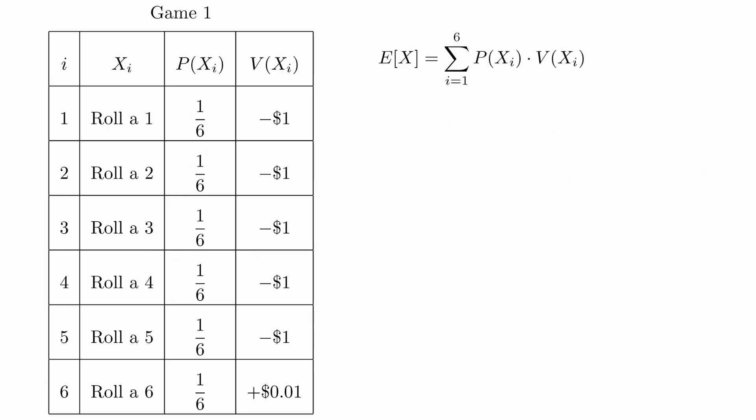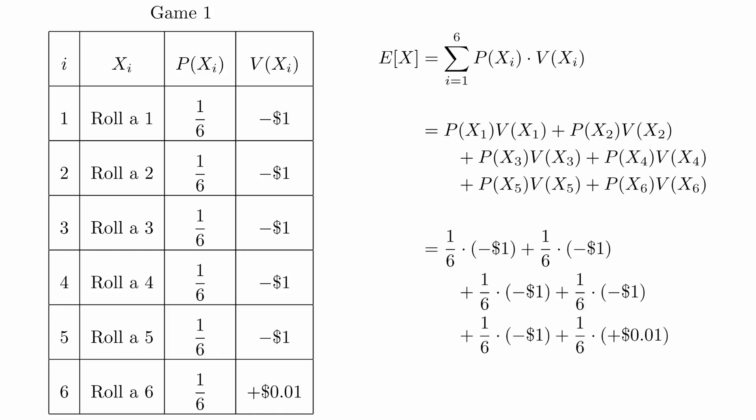When we expand out the summation notation, it looks like this. And then we substitute the probabilities and values for each of the outcomes, and it becomes this.